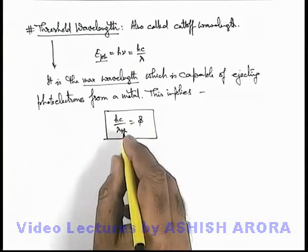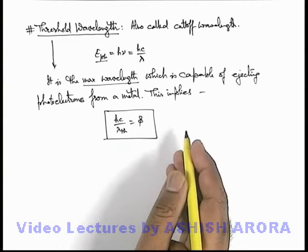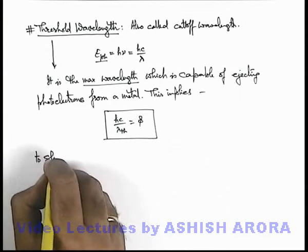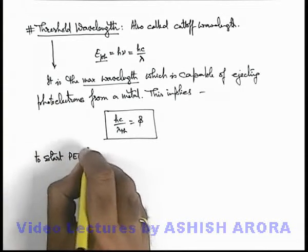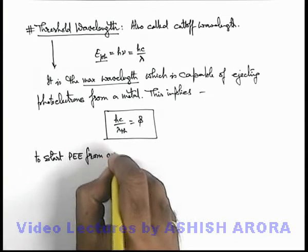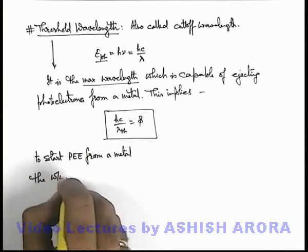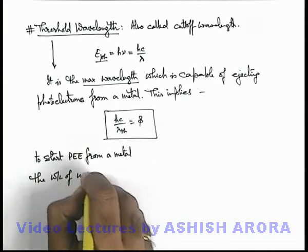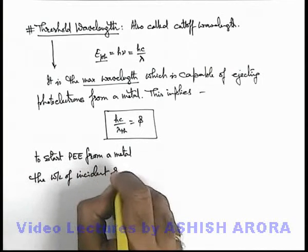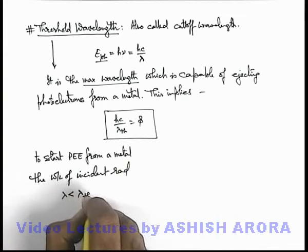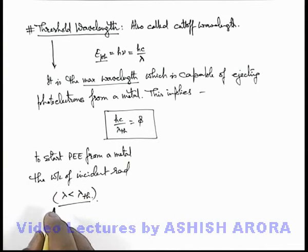So it is the maximum wavelength at which photoelectric effect is possible. That means to start photoelectric effect from a metal, the wavelength of incident radiation lambda must be less than lambda threshold. Then only the photoelectric effect will take place.